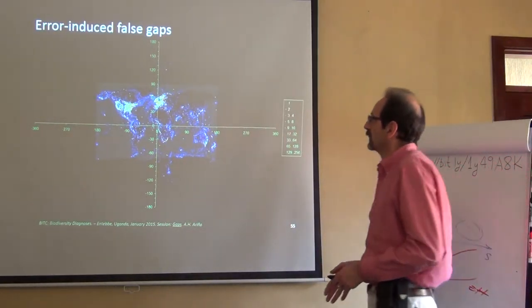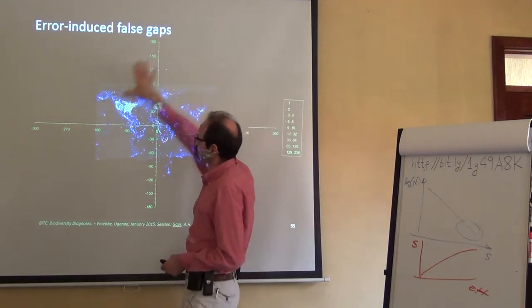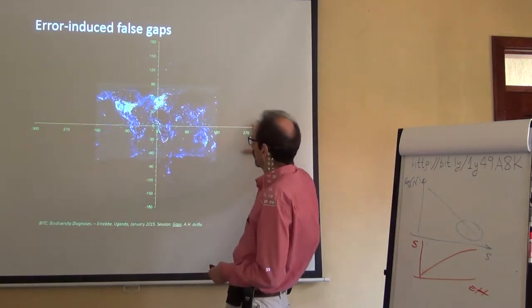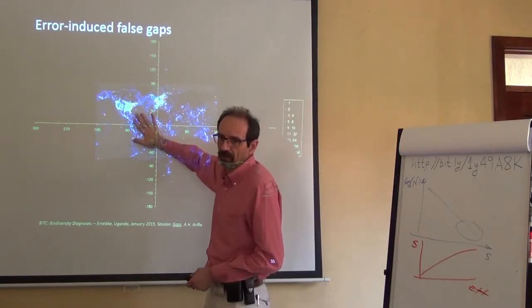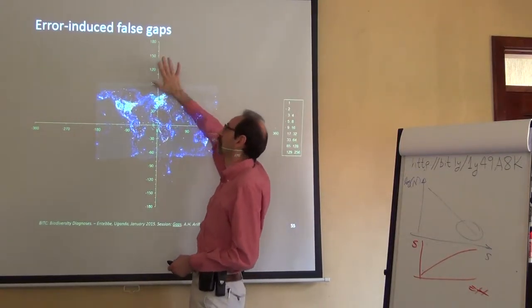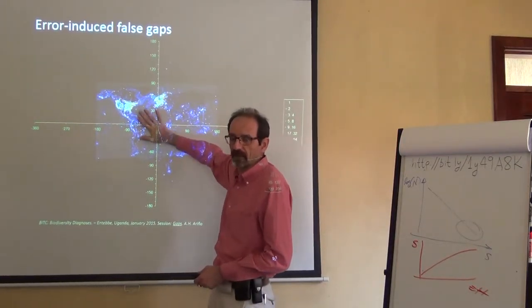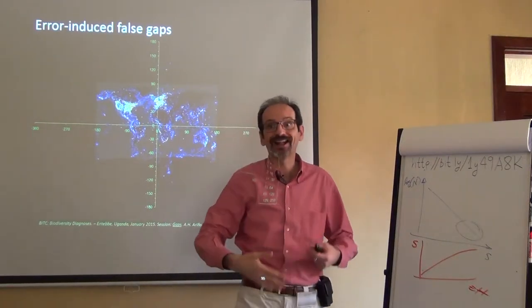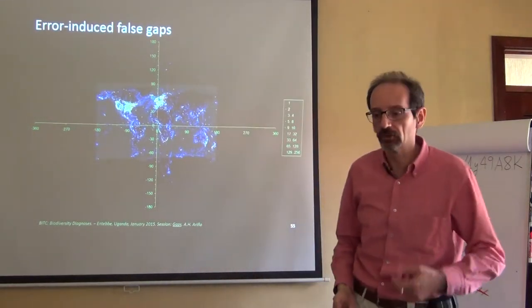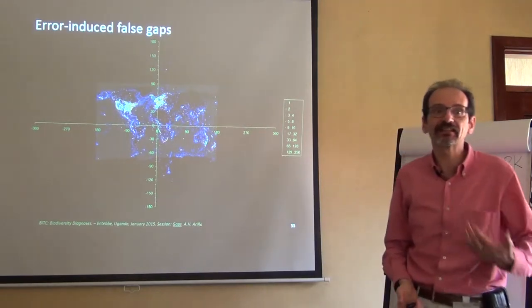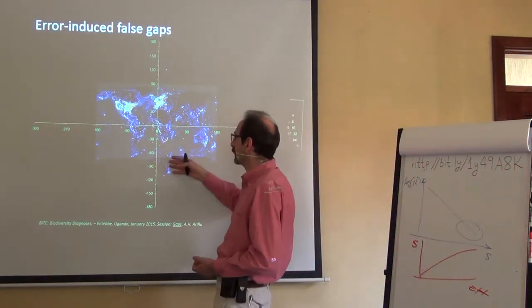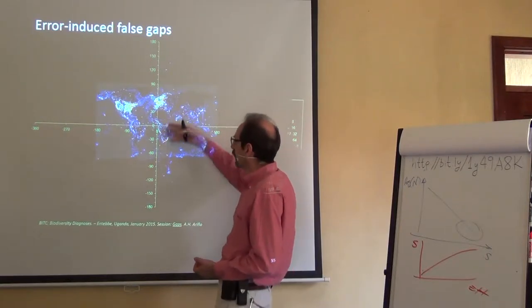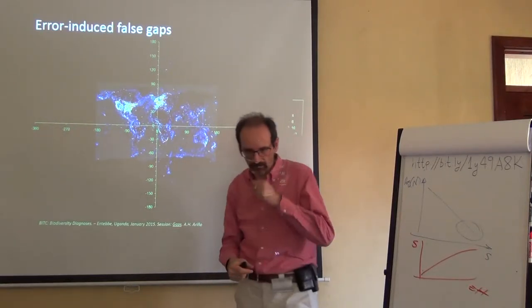Which means that those points that are spreading outside the fixed limits should be somewhere in there. So if they are here, it's because they aren't where they should, and they might have left a gap behind. So those are false gaps. Not that the data is not there, it's that the data have been incorrectly reported and therefore are not where they should be.